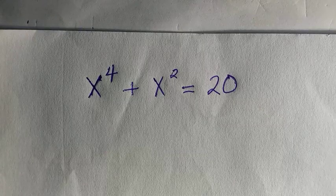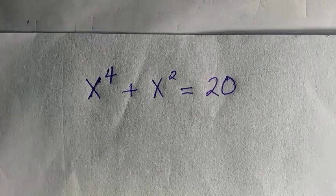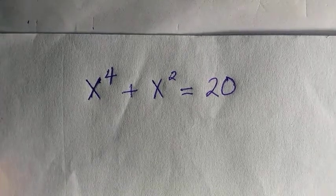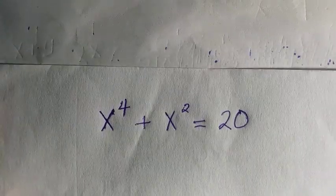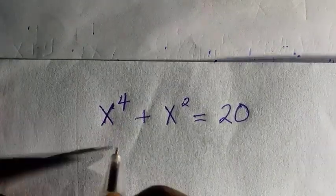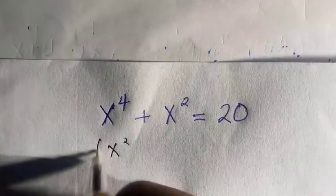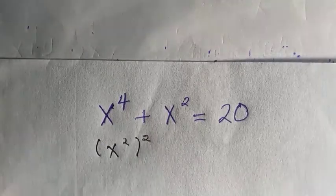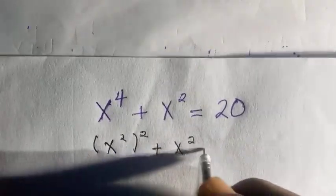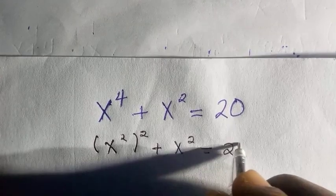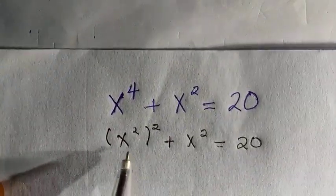Welcome to another video. In this quartic equation, I want to solve for only the real roots. If you have x raised to power 2, and everything is to power 2, so it's x raised to power 4 from the law of indices, plus x raised to power 2 equals 20.